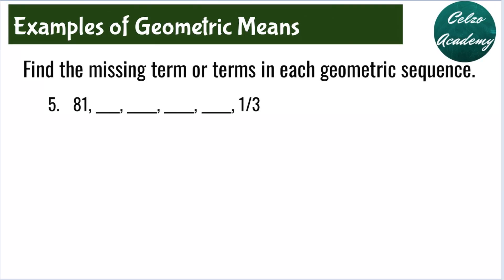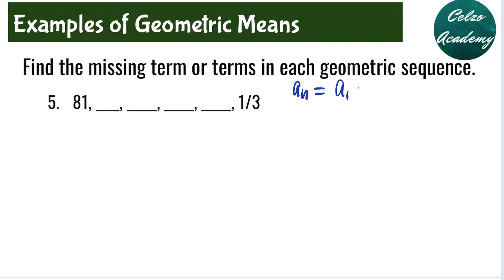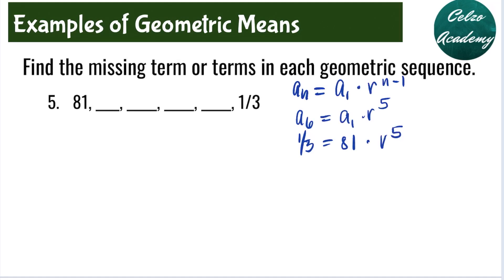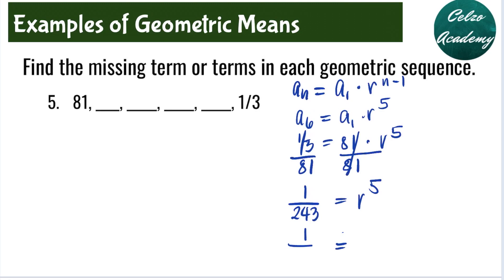Question number 5: find the four missing terms in this geometric sequence. We solve for r using a sub n is equal to a sub 1 times r to the power of n minus 1. We have six terms in total, so a sub 6 is equal to a sub 1 times r to the power of 5. Our a sub 6 is 1 third, and our a sub 1 is 81, giving 81 times r to the 5th power. Dividing both sides by 81, we get 1 over 243 equal to r to the 5th. Taking the 5th root of both sides: the 5th root of 1 is 1 and the 5th root of 243 is 3, so the common ratio is 1 third.